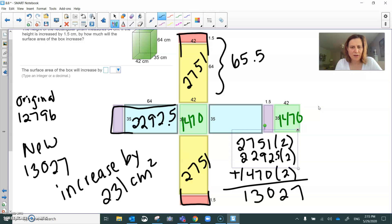Okay, so I'm right with all of those. So maybe I added wrong. Let's try that again. The yellows are 2751 plus 2751. The blues are 2292.5 plus 2292.5 and the green ones are 1470 plus 1470 which is 13,027 minus 12,796 is 231.